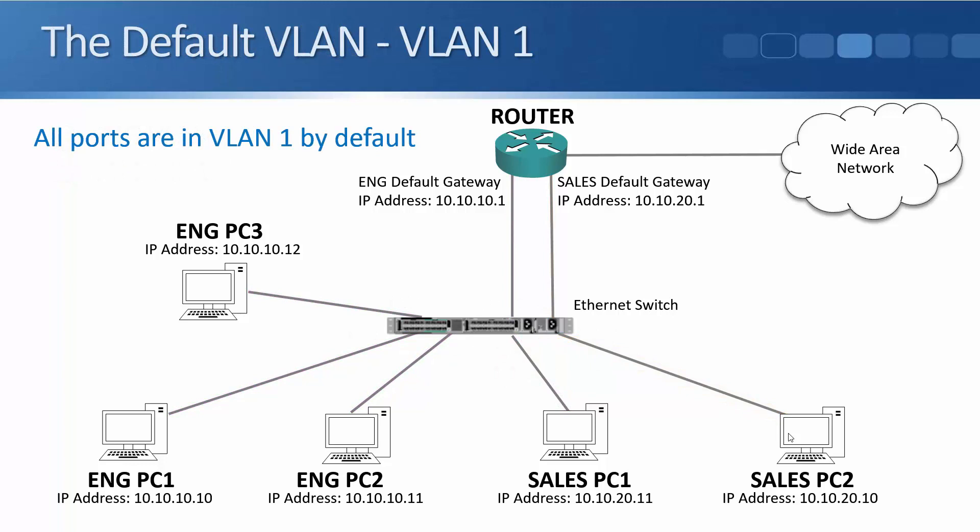The default VLAN is VLAN 1. By default, all ports on a switch are in VLAN 1, and until you manually configure VLANs, your campus LAN will be one big broadcast domain. We don't want that — it's bad for performance and security, so we need to configure specific VLANs.